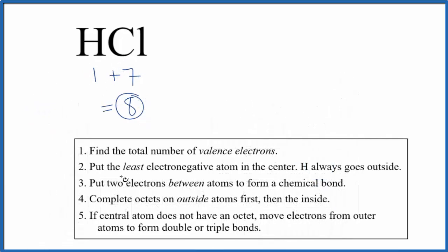For Lewis structures, we normally put the least electronegative atom in the center, but since we only have two atoms, there's no center. So we're going to write H and then Cl.